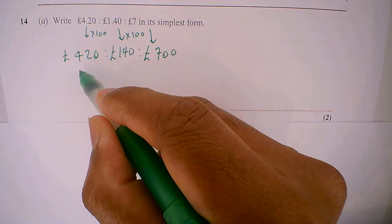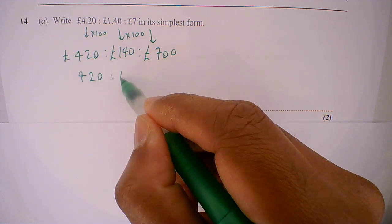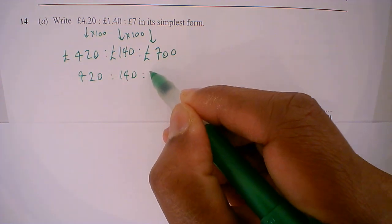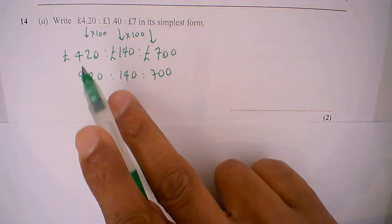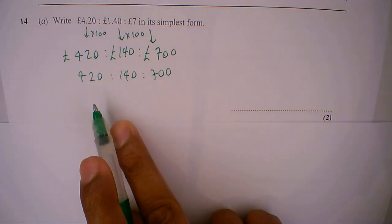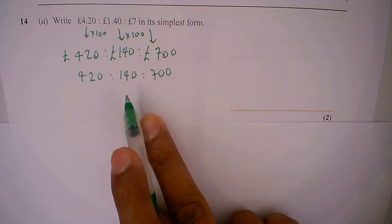Now I can remove the pound sign and now I keep dividing until I can no longer divide or simplify.